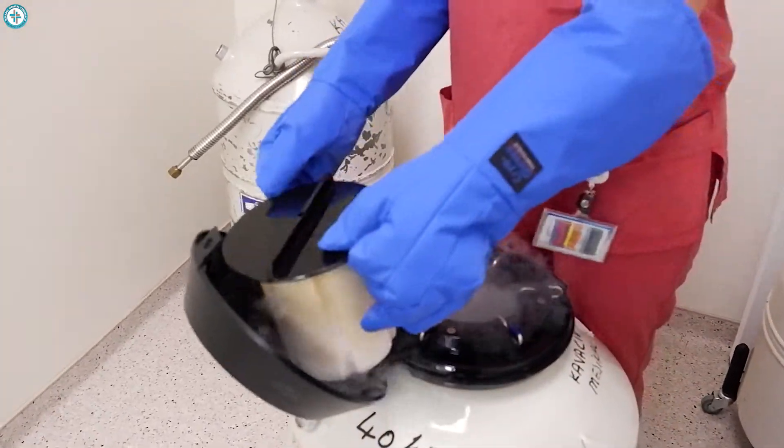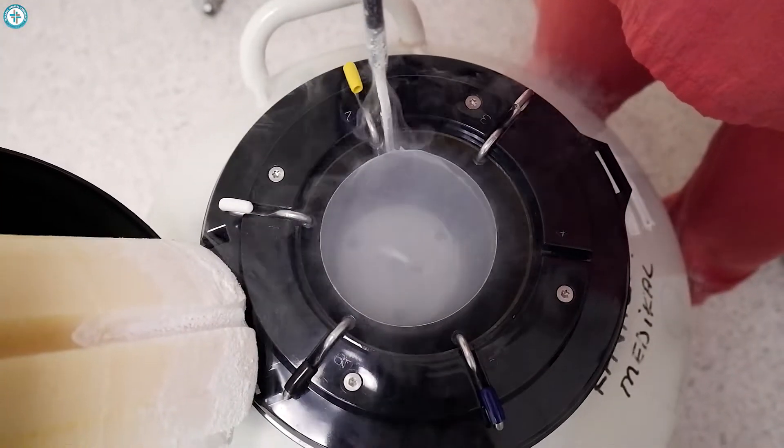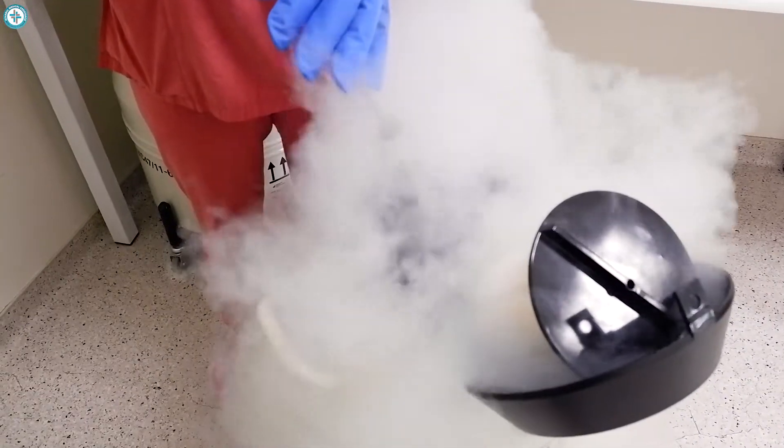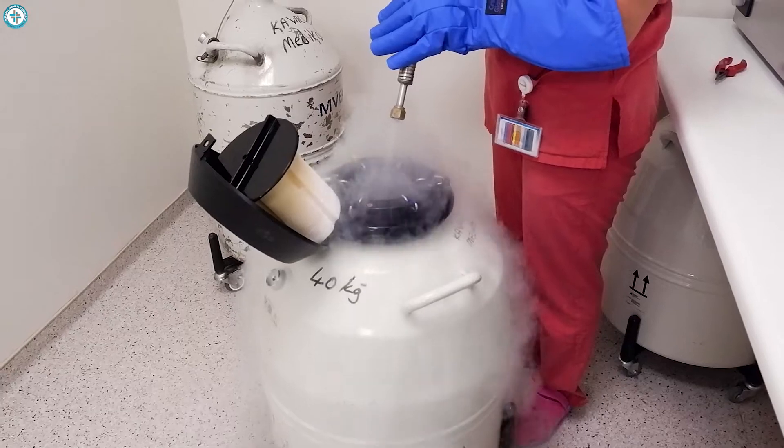Embryo freezing can help people preserve fertility and have options for pregnancy. They keep embryos in tanks of liquid nitrogen at minus 193 degrees Celsius. She washes the embryos with liquid nitrogen to keep them healthy.